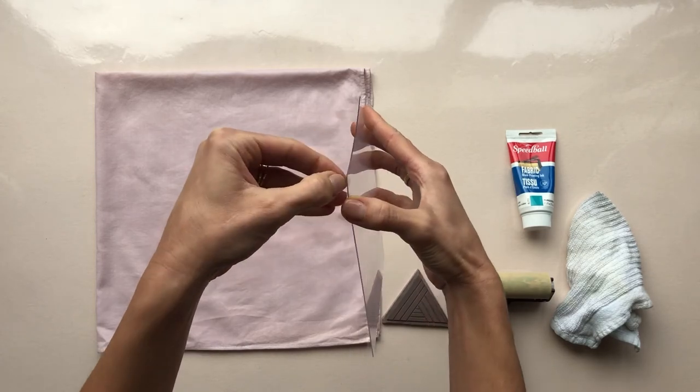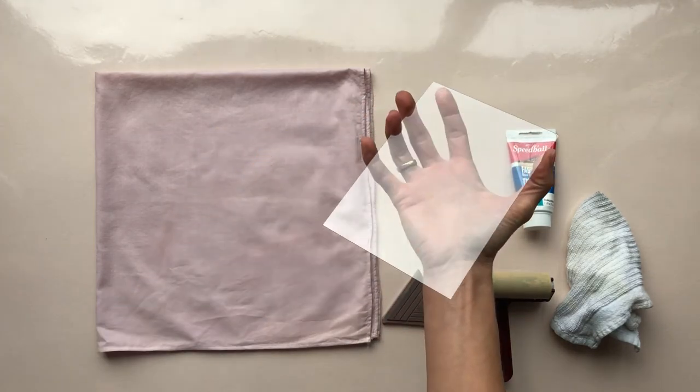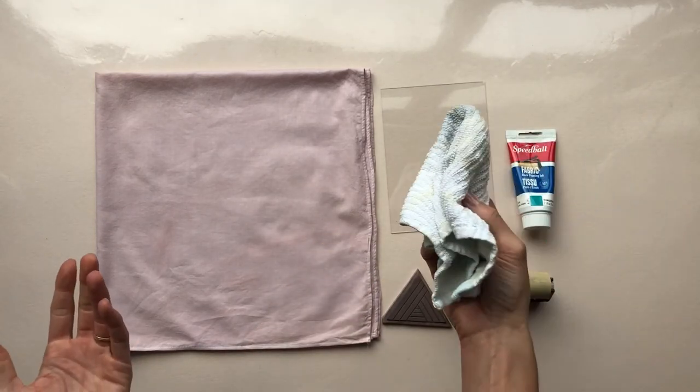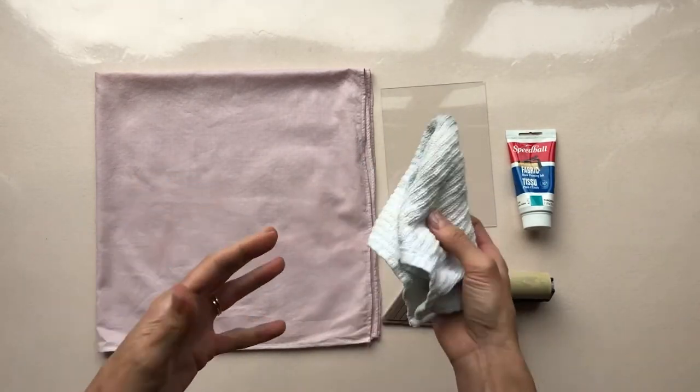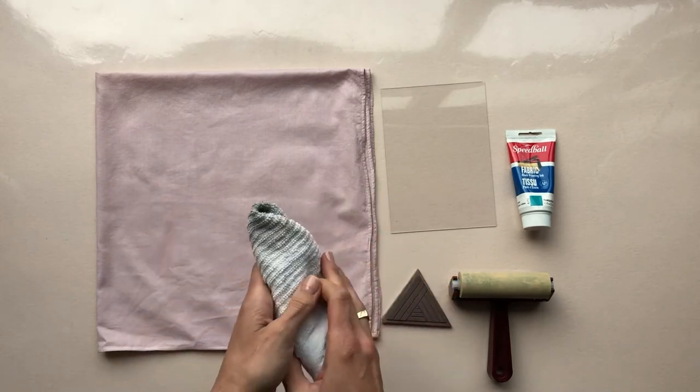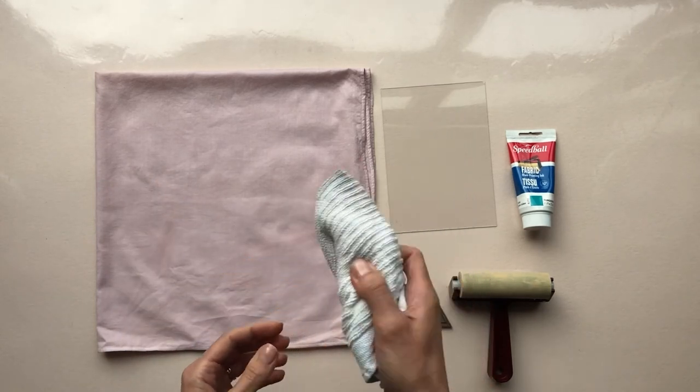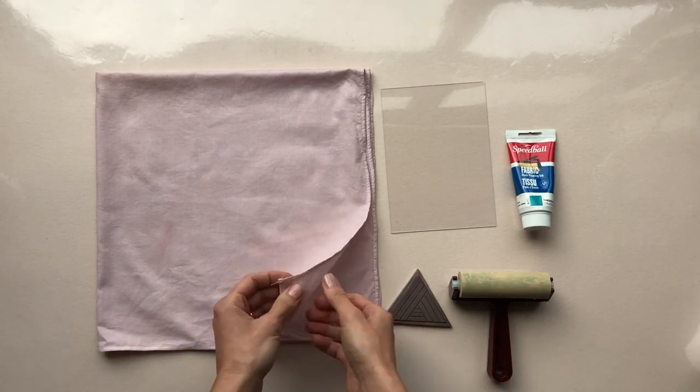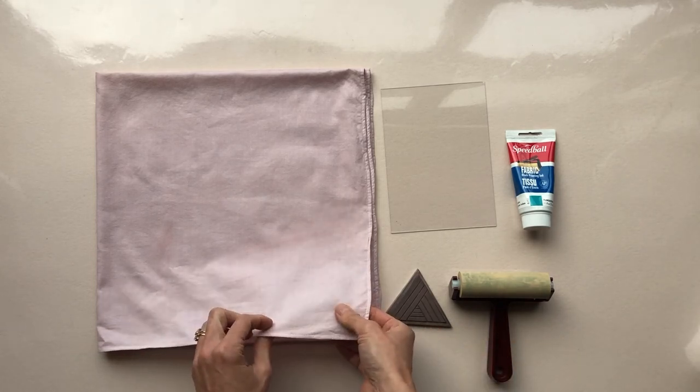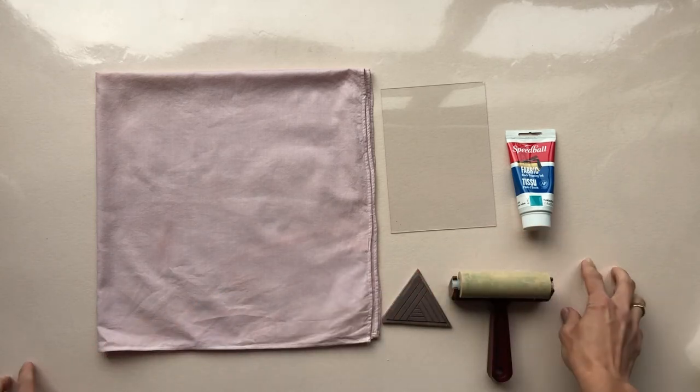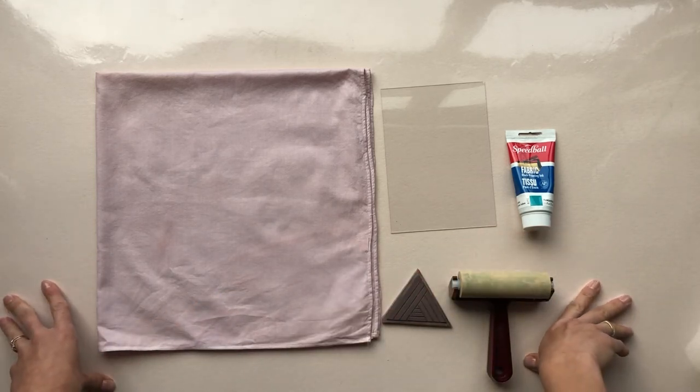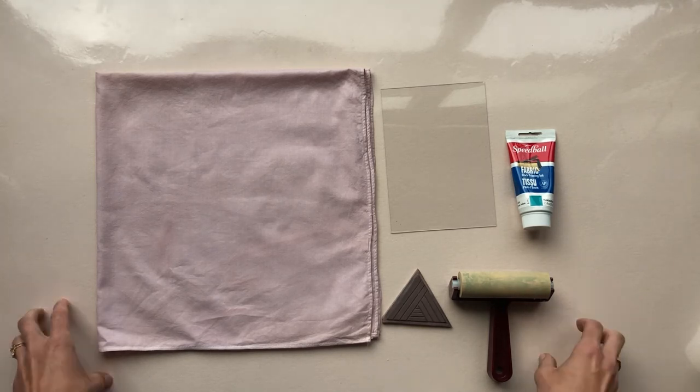It helps to have some fingernails here. And then I also have a rag, sometimes it can be messy and you get ink on your fingers and you don't want that to get on the wrong thing. So just something to blot your fingers. And then one thing worth noting is the ink can bleed through the fabric as you're printing. So I've put something to protect my surface underneath the fabric. So you may want to do the same unless you want to print on your table.